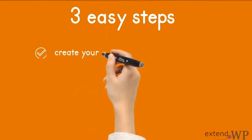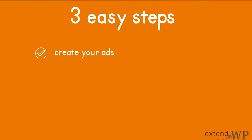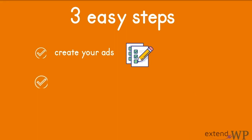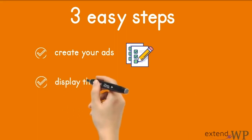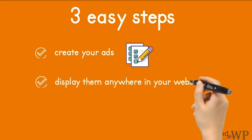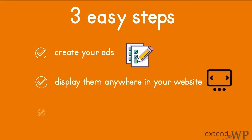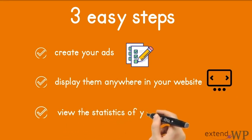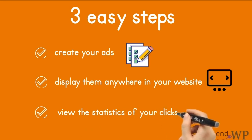You just need to follow this three-step process. Number one, create your ads as banners or slideshow. Number two, display them anywhere in your website as a widget or using a shortcode. Last, view the statistics of each advert's clicks in your WordPress backend.